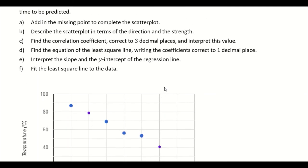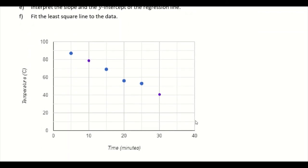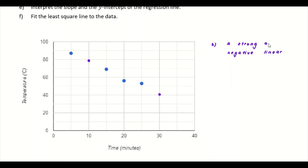For part B, describe the scatter plot in terms of direction and strength. When x (time) increases, y (temperature) decreases, so the direction is negative. The points are close to a straight line, so the strength is strong. The answer: strong negative linear relationship.